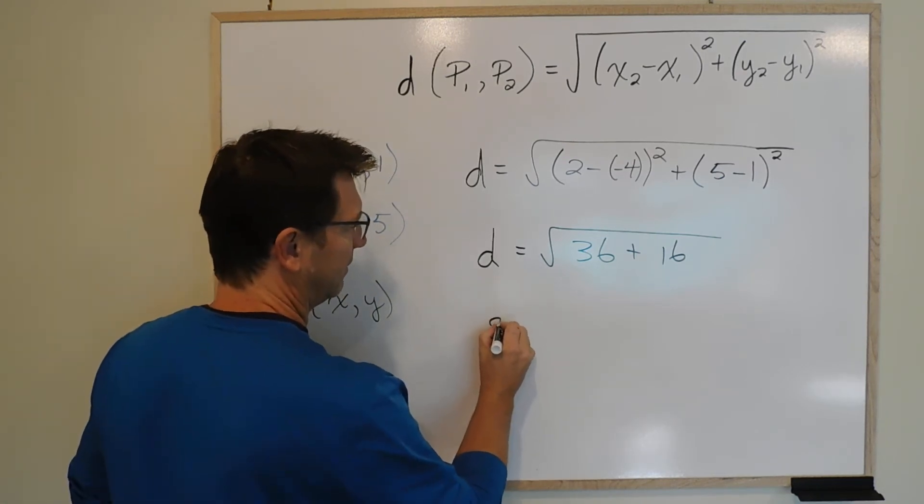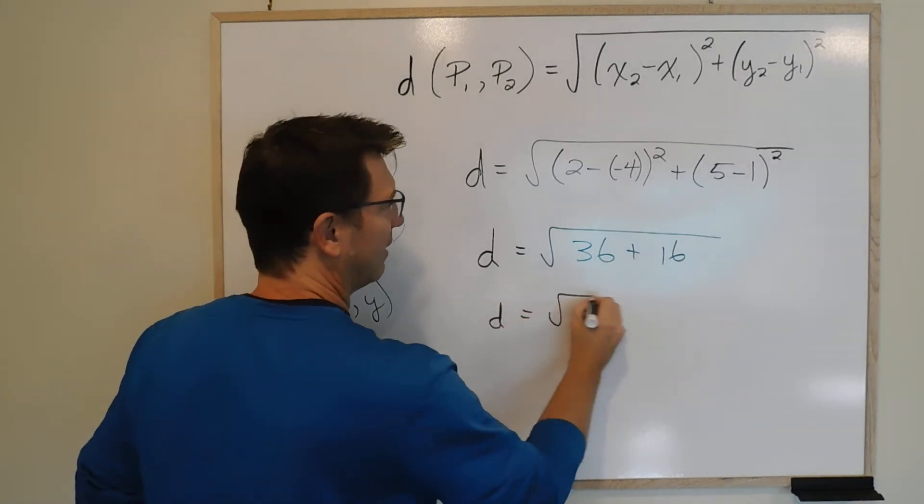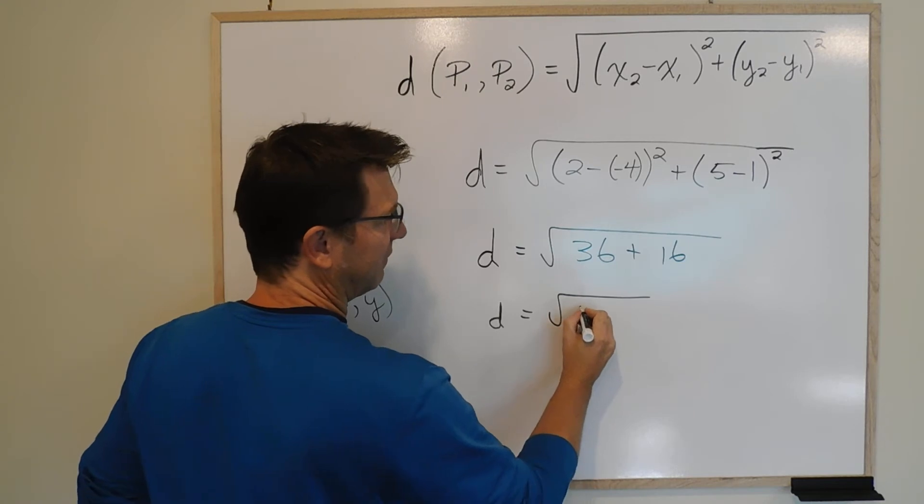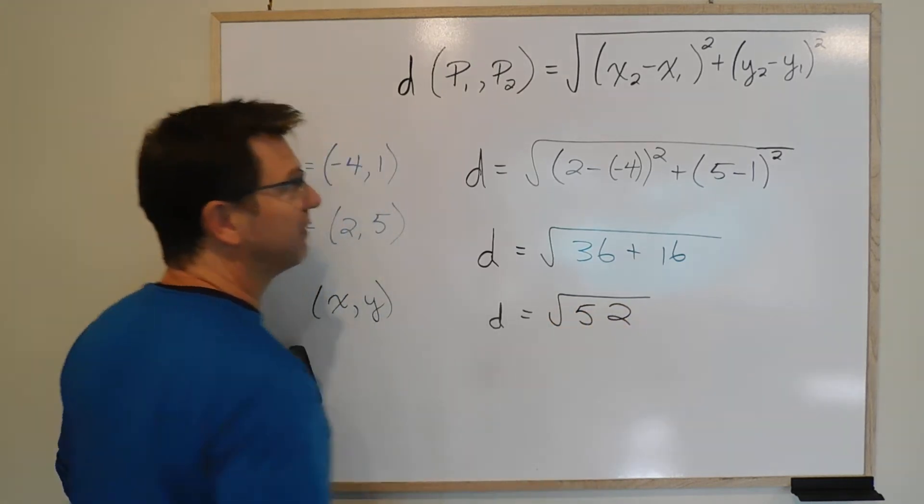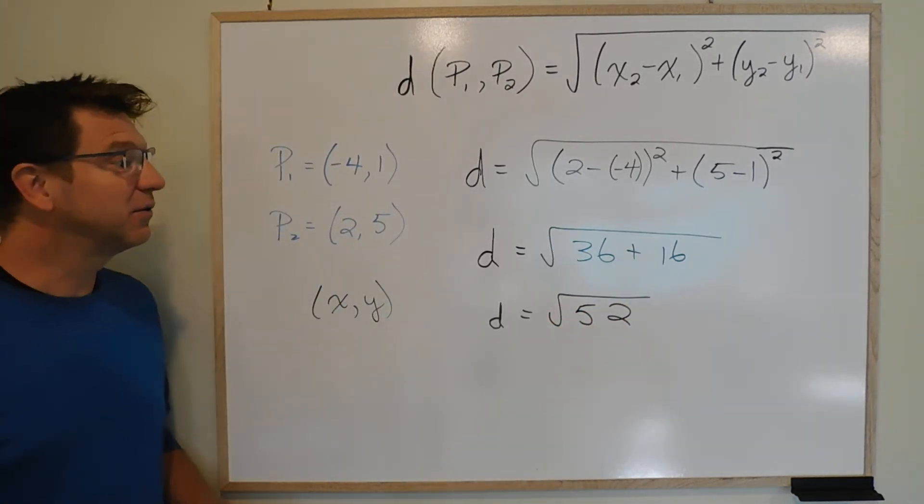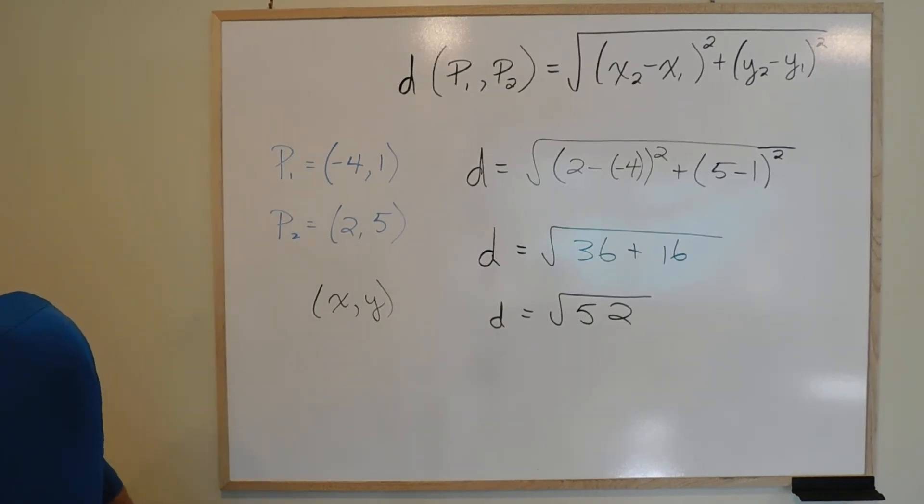So d here, nice d. 36, 46, 52, square root of 52. Now it says round to 2 decimal places, so let me just grab my calculator.